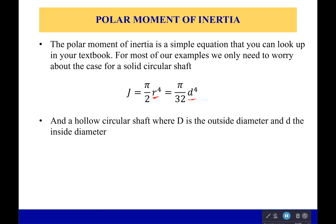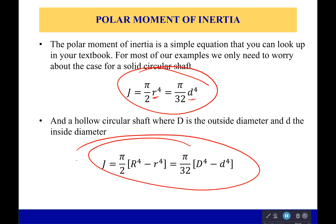And if you have a hollow circular shaft, where D is the outside diameter and lowercase d is the inside diameter, we would get J equals pi over 2 times R to the 4th minus r to the 4th, equals pi over 32 times D to the 4th minus d to the 4th. These are the two which would really help you if you memorize these, or at least write them down somewhere that you'll be able to find them easily.